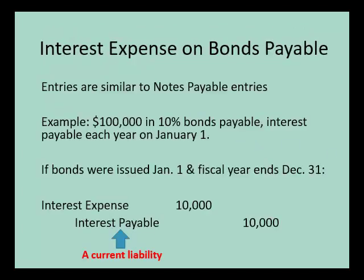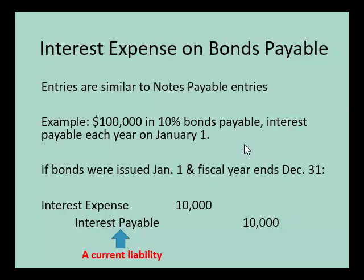Just like with a regular notes payable, companies need to recognize interest expense on bonds payable. So if a company issues $100,000 total in 10% bonds and the interest is paid once a year on January 1st — if the bonds were issued January 1st and the fiscal year ends December 31st — a full year will have gone by. The company will debit interest expense and credit interest payable, because the interest isn't being paid until January 1st of next year, so we must accrue this interest expense in the current fiscal year.